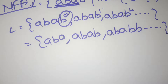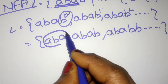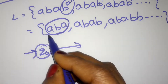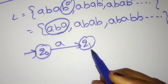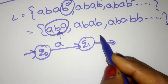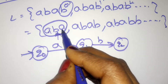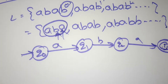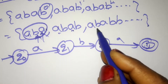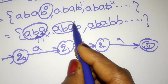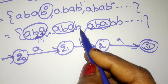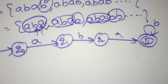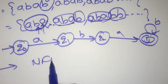By observing the strings, the minimum acceptable string is 'aba'. Starting from state q0, the first input symbol 'a' moves to the next state, 'b' moves to another state, and 'a' moves to the final state. After reading 'aba', it can read any number of b's, and those strings are also acceptable.